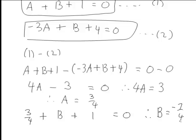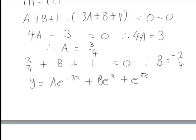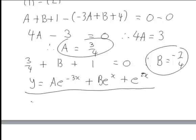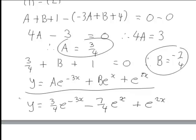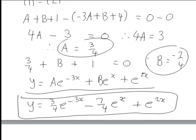We've now found a and b, which we substitute into our general solution. The final step gives y equals (3/4)e to the negative 3x minus (7/4)e to the x plus e to the 2x. That is the solution of this DE taking the initial conditions into account.